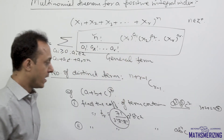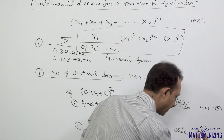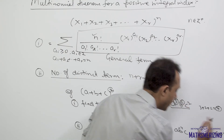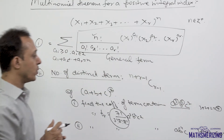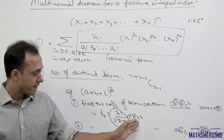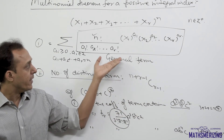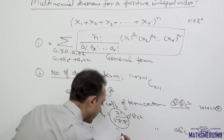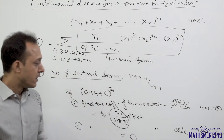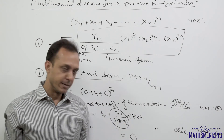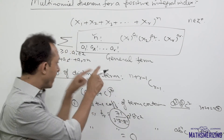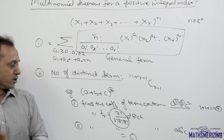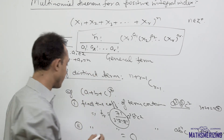Now consider finding the coefficient of the term containing a b⁴ c. In this case, the powers are 1 plus 4 plus 1, which equals 6, and that is not equal to n (which is 7). If the sum of the powers is not equal to n, then that term will not be present in the expansion. So the coefficient of the term containing a b⁴ c is simply 0.